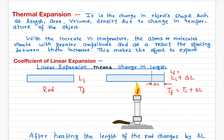The molecules start vibrating with greater amplitude, and as a result, the spacing between the molecules increases. Overall, it looks like the object has expanded. In other words, the only reason the length of a material changes is because the atoms or molecules started to vibrate with greater amplitude due to the change in temperature.